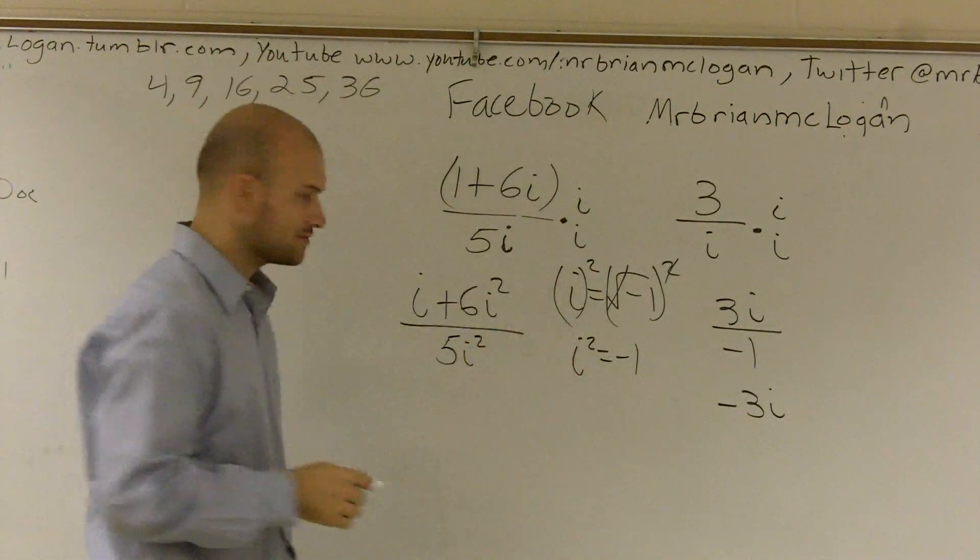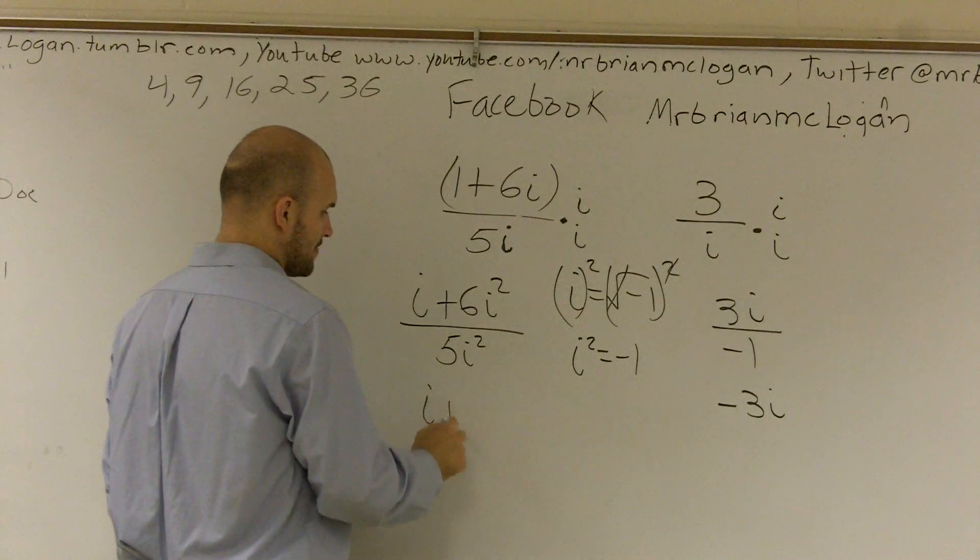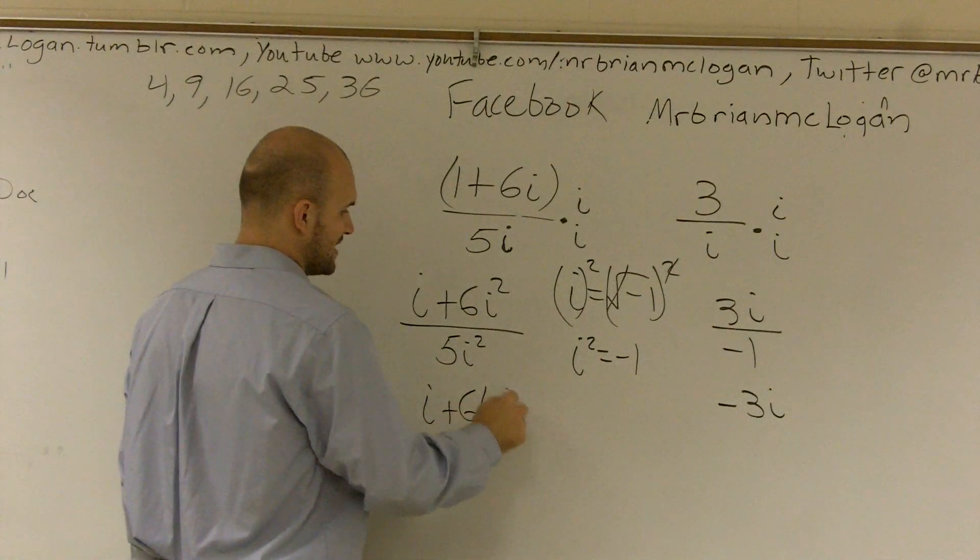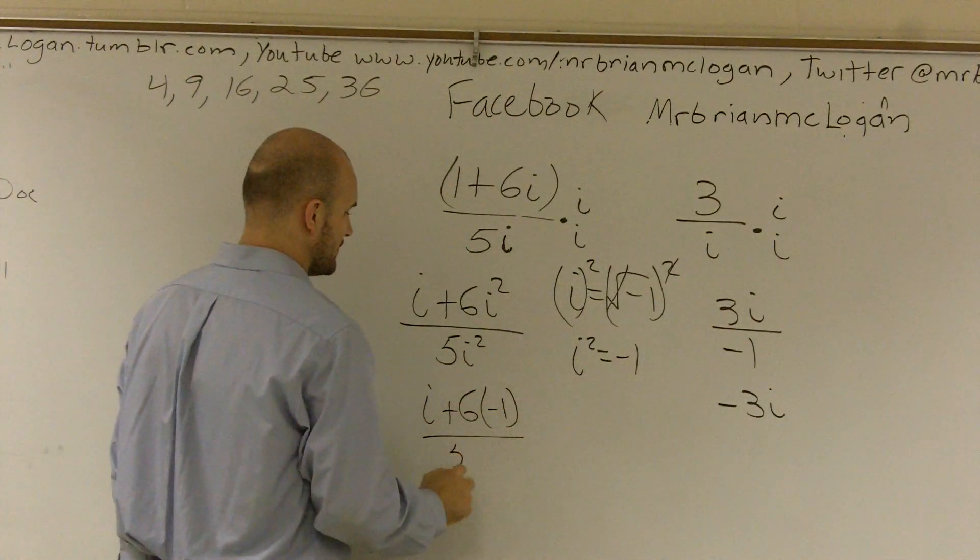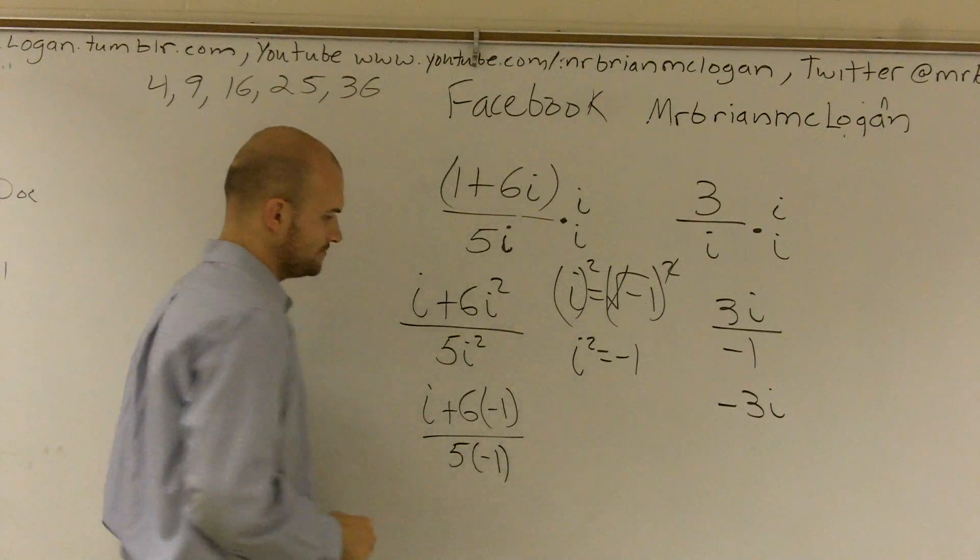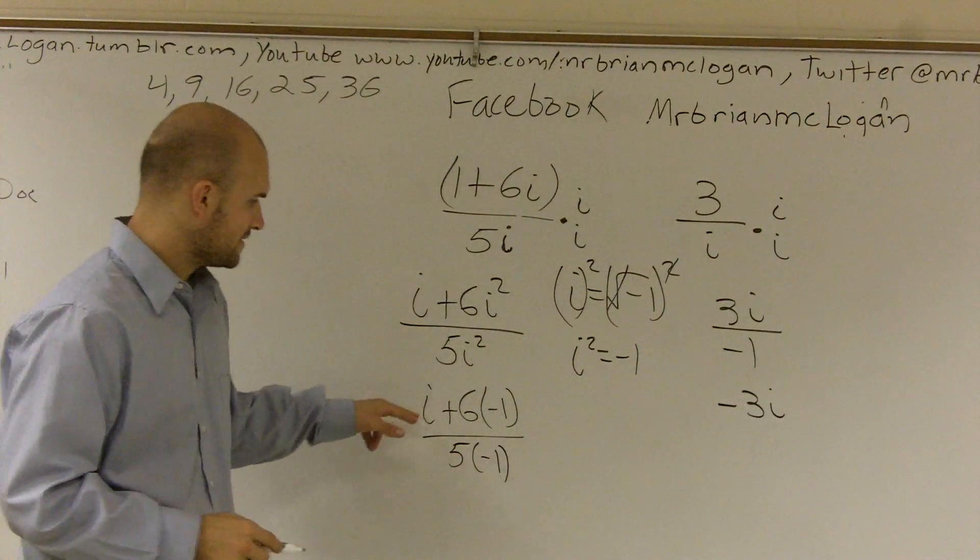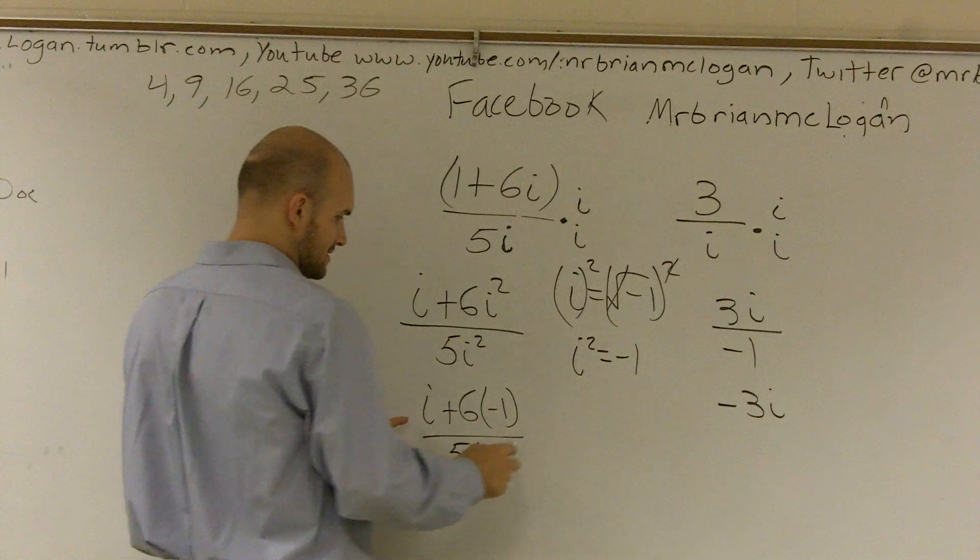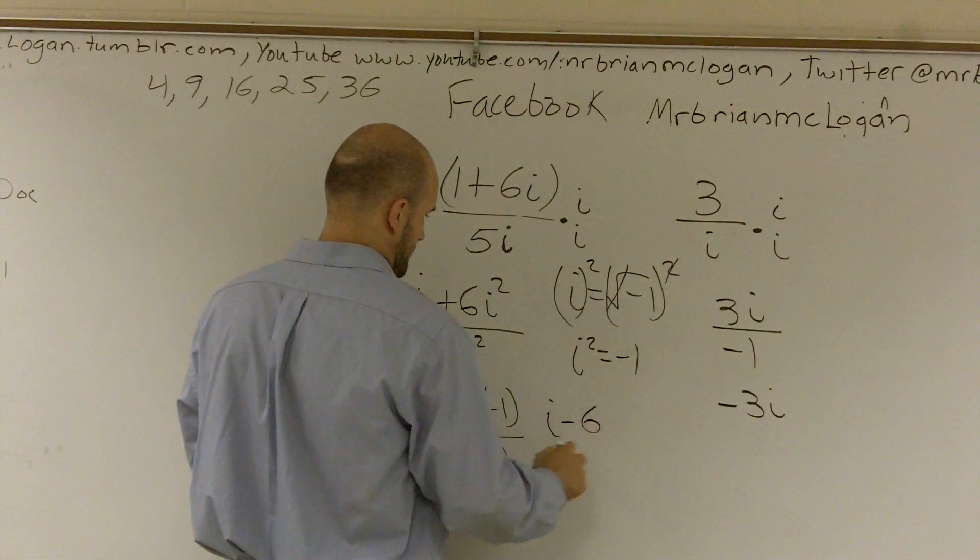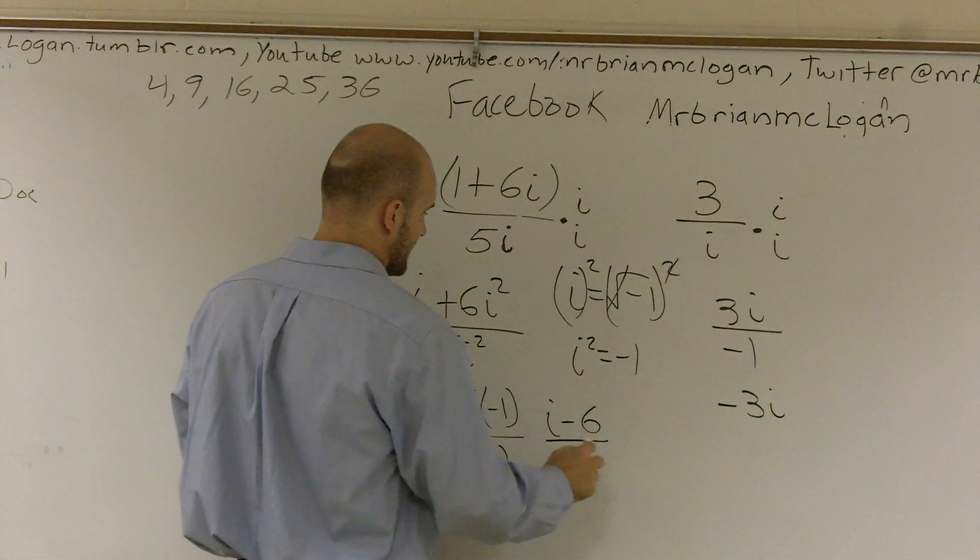Now remember, i squared is equal to negative 1. So I have i plus 6 times negative 1 all over 5 times negative 1. Therefore, this now becomes i minus 6 all over a negative 5.